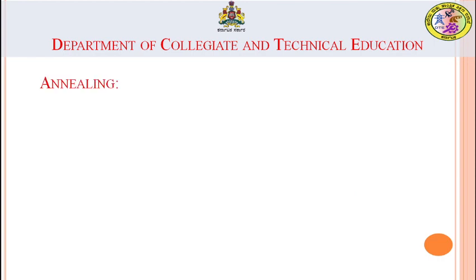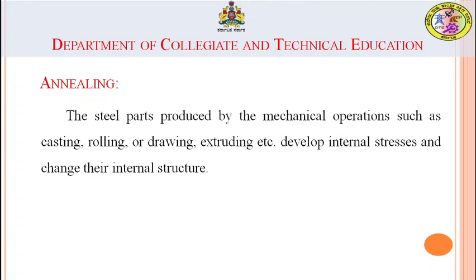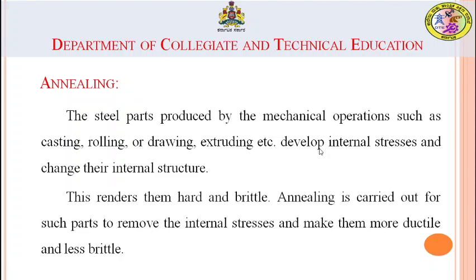We will now study the first type of heat treatment: the annealing process. Steel parts produced by mechanical operations such as casting, rolling, drawing, and extruding develop internal stresses and changes in their internal structure, which renders them hard and brittle.